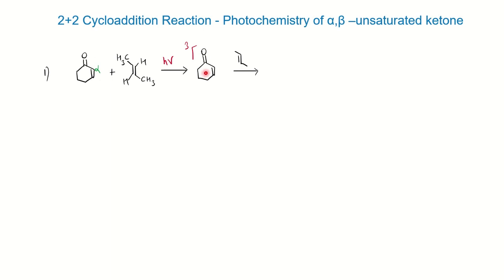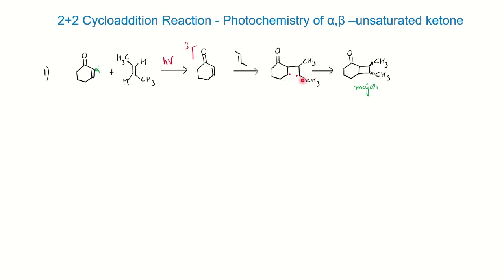From the triplet state it reacts with the alkene: the alpha carbon reacts with the carbon of the alkene, leaving behind a biradical intermediate. The major product is the trans product because the two bulky groups should be on opposite sides. In this way you can show the 2+2 cycloaddition reaction for alpha-beta unsaturated ketones.